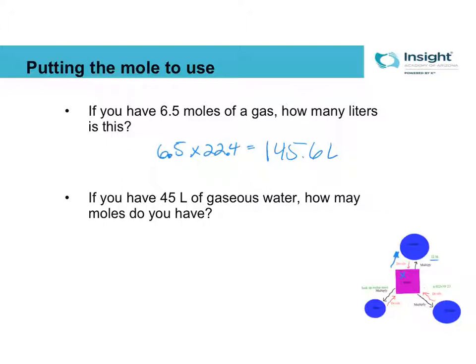This next one is, I've got 45 liters of gaseous water. How many moles do I have? That means I'm starting in volume and I'm going to go towards moles. So, I'm going to divide it by the 22.4. So, 45 liters divided by 22.4 is 2.0 moles.